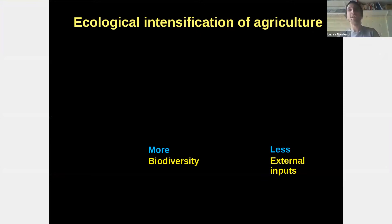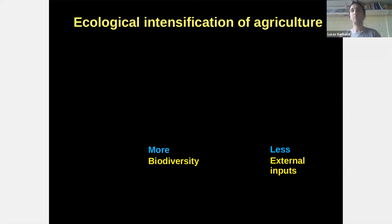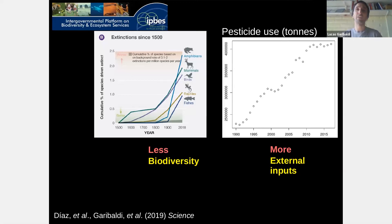Ecological intensification is based on more biodiversity in the farms and the use of less external inputs. External inputs is everything that comes from outside the farm that you use for producing, like agrochemicals, but also hives — honeybee hives as an example of external inputs. By doing this — using less external inputs and enhancing biodiversity — you can produce more, with better quality of food, in a more environmentally friendly way.